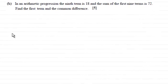Hi there. In this question we're told that in an arithmetic progression the 9th term is 18 and the sum of the first 9 terms is 72. And what we've got to do is find the first term and the common difference.